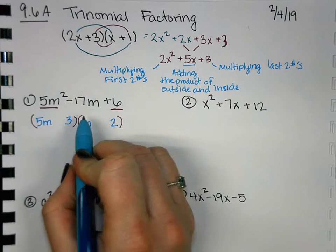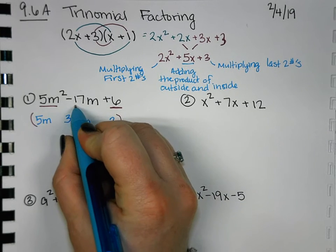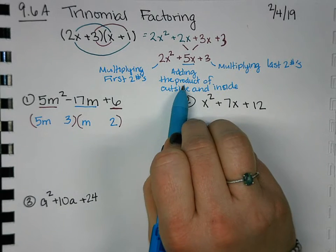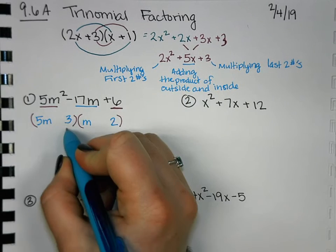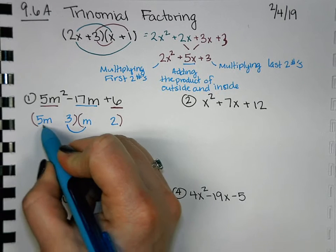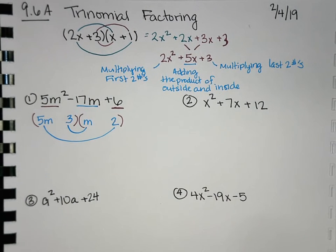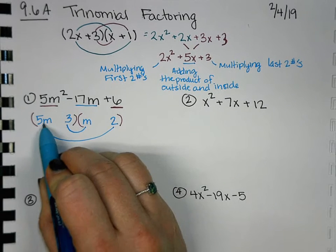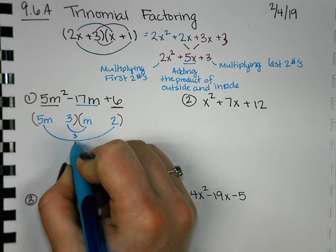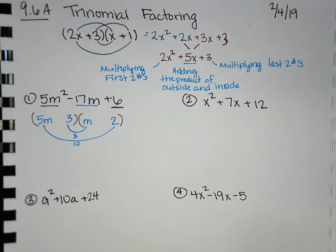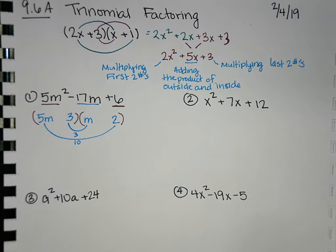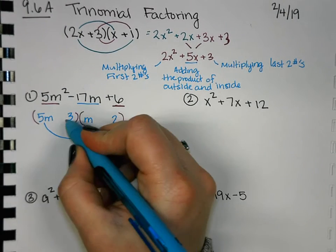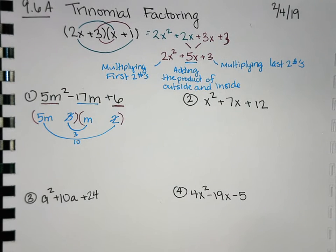And then how do we, now we need to check to see if our middle term is correct. And how did we get our middle term? By adding the product of the outside and inside. So we're going to multiply here and multiply here and add up our answers. So 3m plus 5 times 2 is 10. So 3 and 10, does that give us negative 17? No. So when that happens, you go, okay, this one's not going to work. Can you think of another way to arrange it? So there's a little bit of guess and check here.